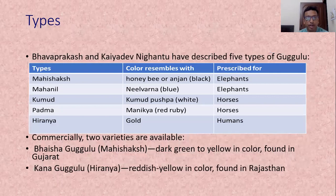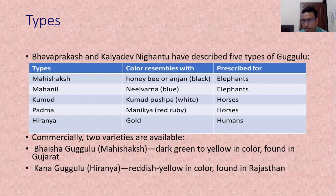Mahaprakash and Kaiyadev Nighantu describe five types of Gugul: Mahisaksha, Mahanila, Kumudha, Padma, and Hiranyaksha. Mahisaksha is black or anjan in color. Mahanila is blue. Kumudha is white like the Kumudha flower. Padma is ruby or manikya color. Hiranyaksha is gold or heima color. Mahisaksha and Mahanila varieties are used for elephants. Kumudha and Padma varieties are used for horses. Hiranyaksha variety is used in human beings. There are also two commercial varieties available: Bhaisa Gugul, compared to the Mahisaksha variety, and Kana Gugul, compared to the Hiranyaksha variety.